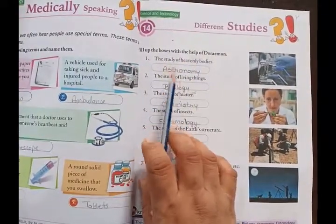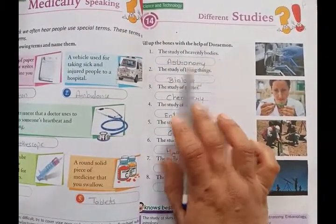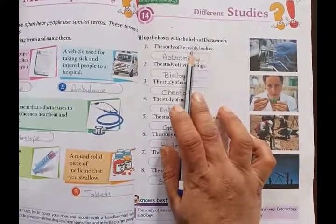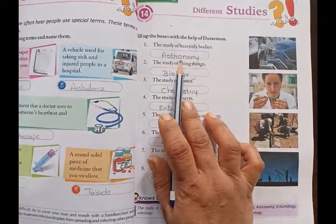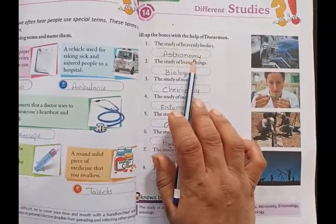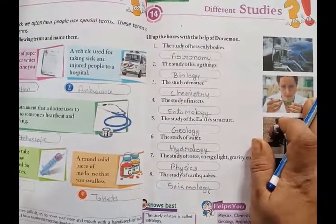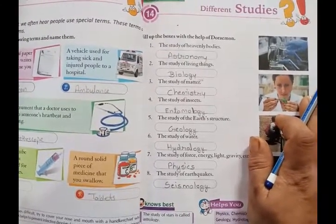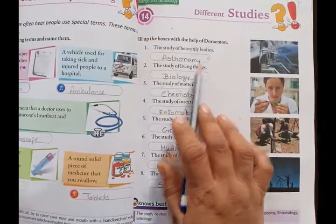Fill the box with the help of Doraemon above. First: the study of heavenly bodies — heavenly bodies matlab jo aasman mein hote hain unke baare mein jab hum padhai karte hain — usi kya kehte hain? Astronomy. A-S-T-R-O-N-O-M-Y. The study of heavenly bodies is called astronomy.